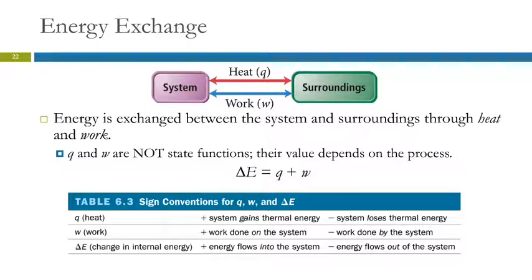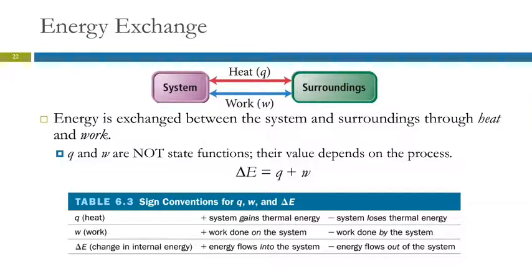How is energy exchanged? Through heat and through work. Heat is the transfer of energy based on a difference in temperature, and work is a force exerted through a distance. We use Q to represent heat and W for work. Heat and work are not state functions — they are like the distance traveled up the mountain; they do depend on the process. The overall change in energy doesn't. The change in energy is equal to heat plus work: ΔE = Q + W.